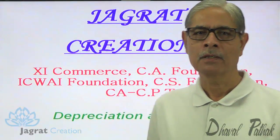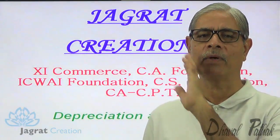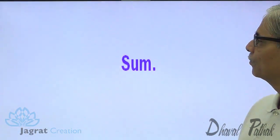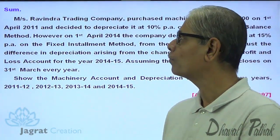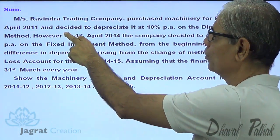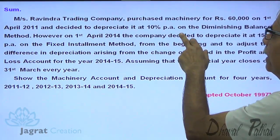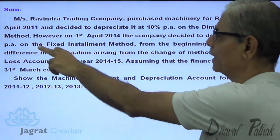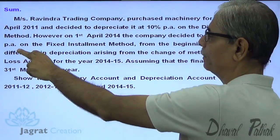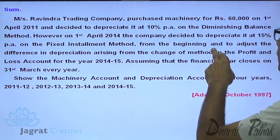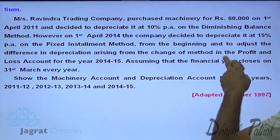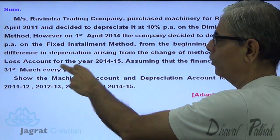I want to solve one sum wherein the method for providing depreciation has been changed. Ravindra Trading Company purchased a machine for Rs. 60,000 on 1st of April 2011, and decided to depreciate at 10% per annum on diminishing balance method. However, on 1st of April 2014, the company decided to depreciate it at 15% per annum on fixed installment method from the beginning, and to adjust the difference in depreciation arising from the change of method in the profit and loss account.